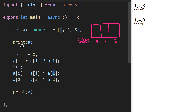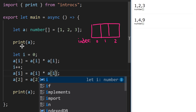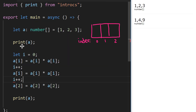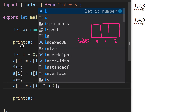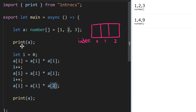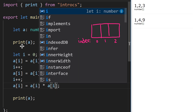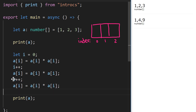We repeat this pattern — assign `a[i] = a[i] * a[i]` and increment `i` — one more time. There's still a lot of repetition happening here, but when we save this program notice that the output is the same. So let's think through how this program is processed.